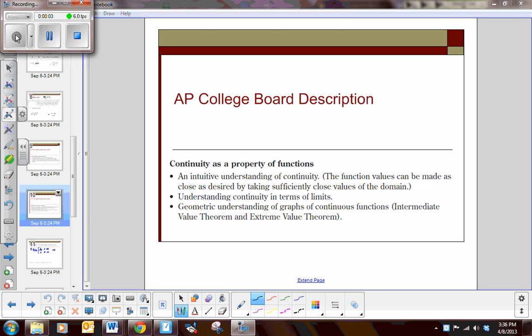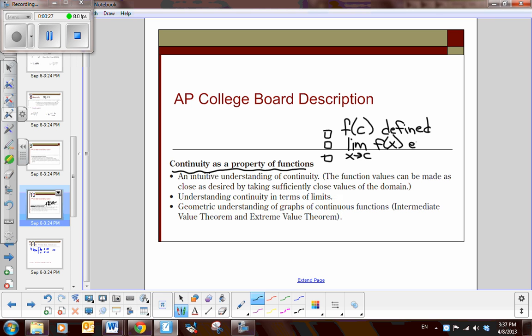Today we're reviewing the concept of continuity. The most important thing is to memorize the three conditions of continuity. Those three definitions are: the value at point C is defined, so it exists; the limit as you approach that value C of the function exists; and the limit as you approach that value C equals the value of the function at C. We're going to look at some problems where we check these three conditions.